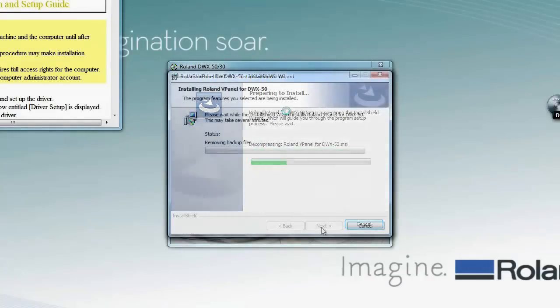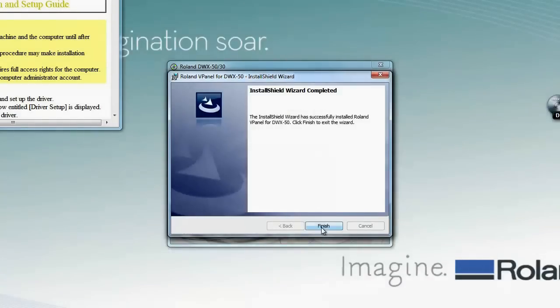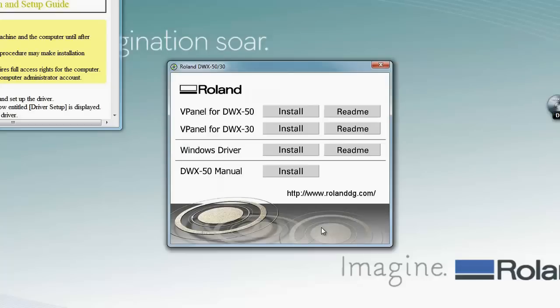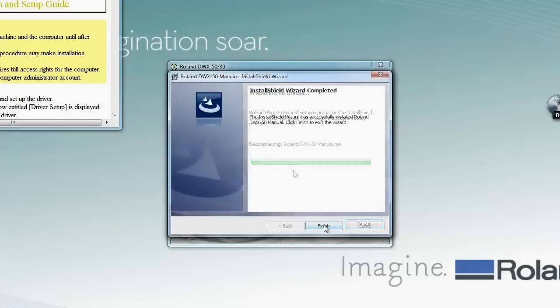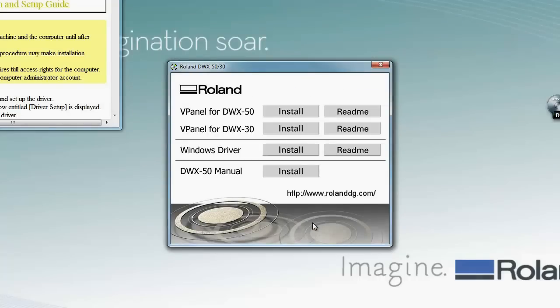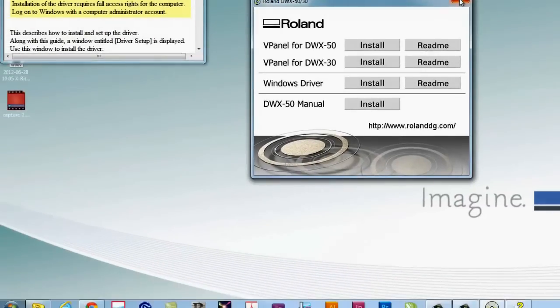Simply click on install and follow the wizard through that process as well. Once completed, you'll install the last DWX50 manual, which is the electronic version.